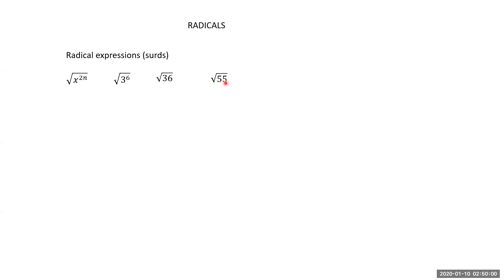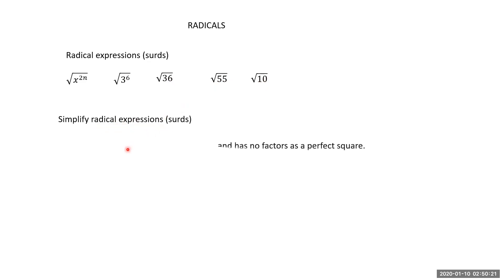55 has no perfect square factor: 55 = 5 × 11, and both 5 and 11 are prime. Similarly, 10 = 5 × 2, both prime, so 10 has no perfect square factor. Therefore, the square root of 55 and the square root of 10 are already in simplified radical form.